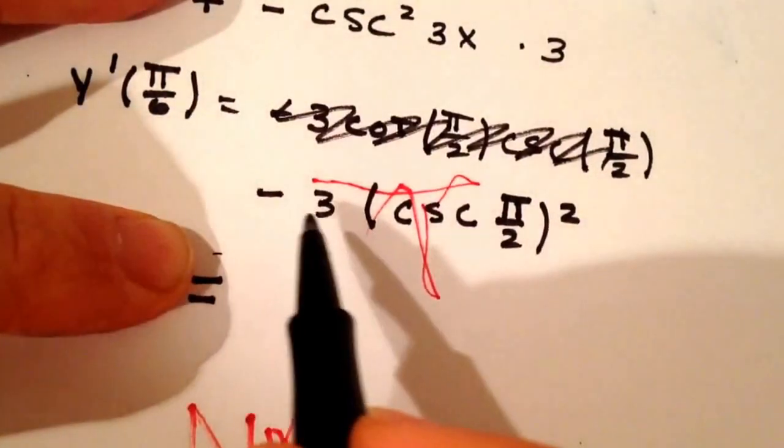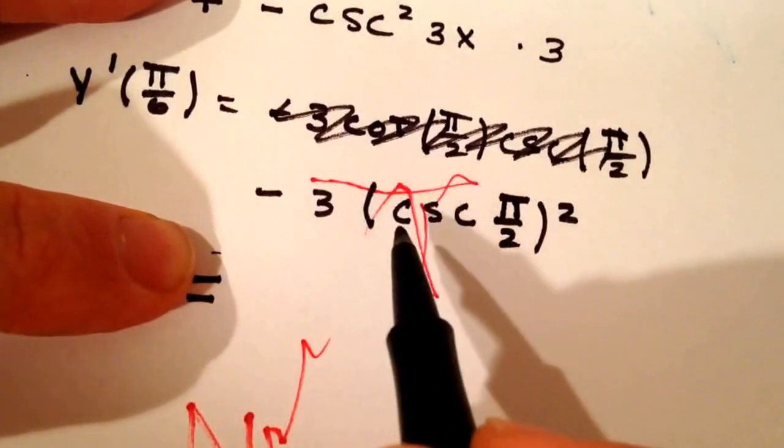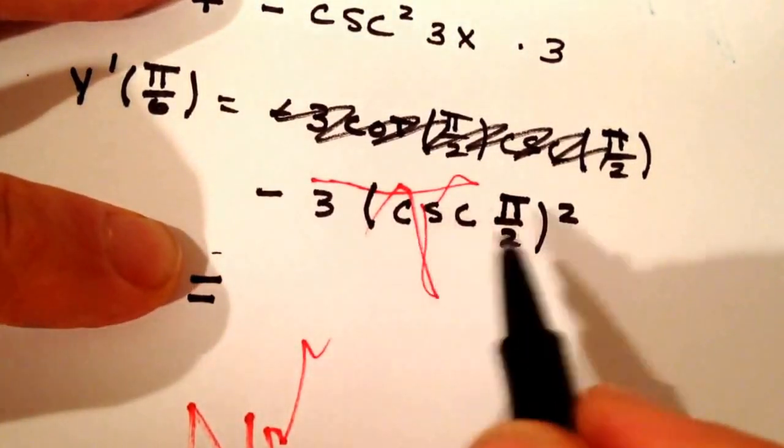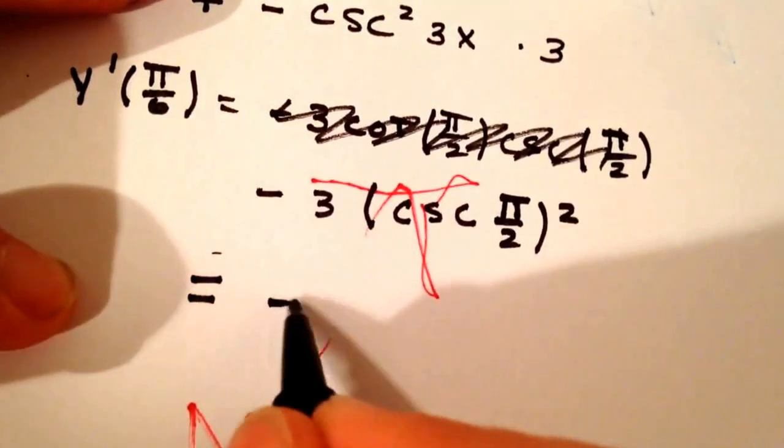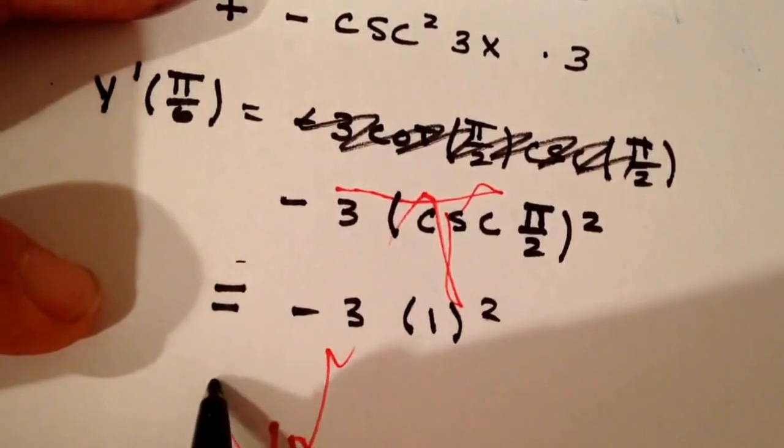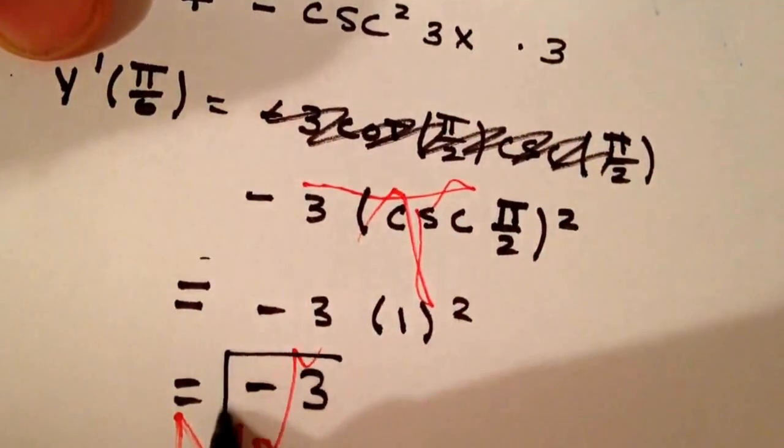So what we're really left with here is negative 3, cosecant of π/2 squared. And the cosecant of π/2 is 1 as we talked about just a little while ago. So we got negative 3 times 1 squared, which gives us negative 3. We got negative 3.